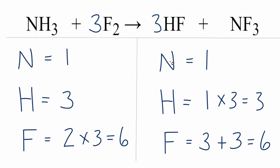This equation would be balanced. One nitrogen on each side, three hydrogens, and six fluorines. So that's the balanced equation for NH3 plus F2 yields HF plus NF3. This is Dr. B, and thanks for watching.